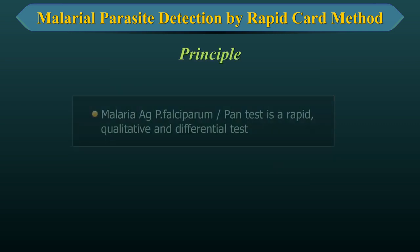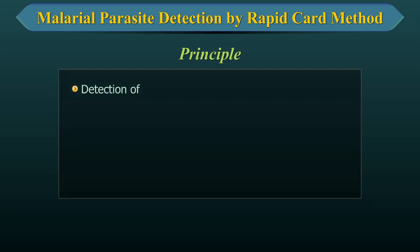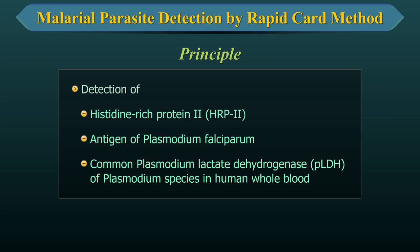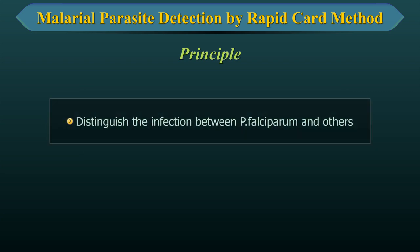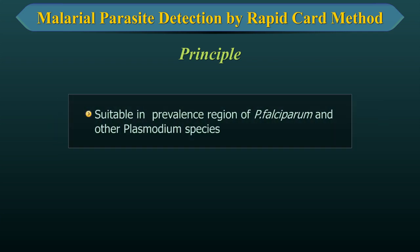Principle: The Malarial Antigen Plasmodium falciparum PAN test is a rapid, qualitative and differential test for the detection of histidine-rich protein 2 antigen of Plasmodium falciparum and common Plasmodium lactate dehydrogenase of Plasmodium species in human whole blood. It detects histidine-rich protein 2 antigen-specific, distinguishes the infection between Plasmodium falciparum and other malarial species, and is suitable in the prevalence region of Plasmodium falciparum and other Plasmodium species.